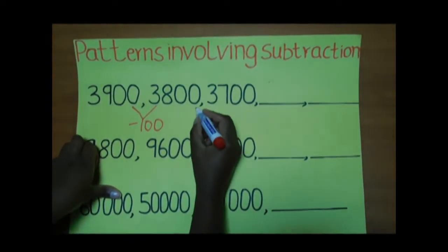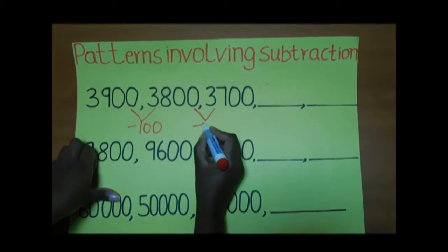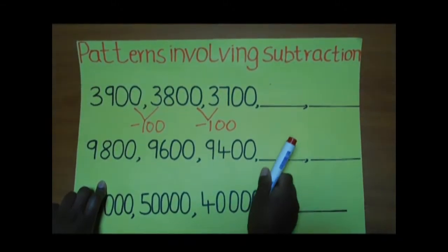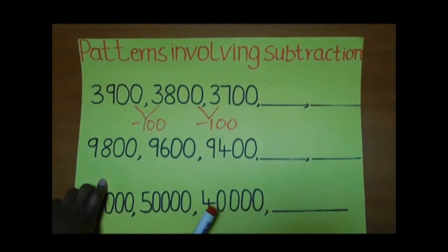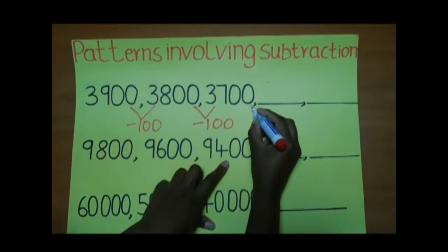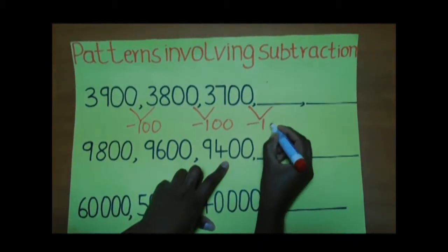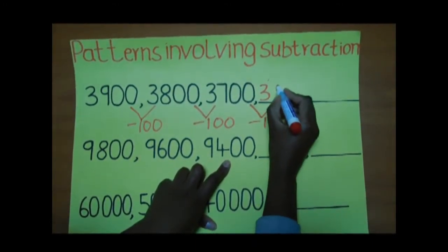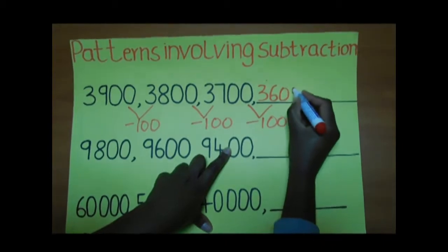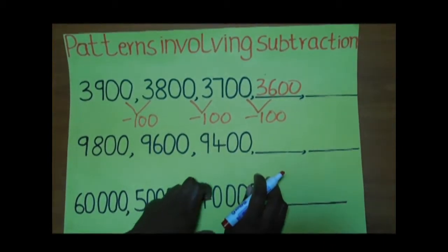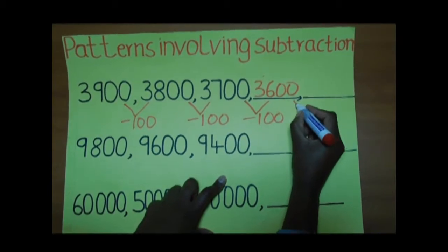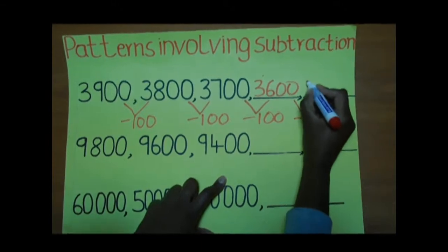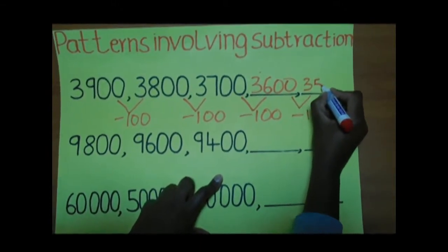The difference here is 100. Therefore, to find our missing number here, we are going to subtract 100 from 3700 and we will get 3600. To get the other missing number, we are going to subtract 100 from 3600 to get 3500.